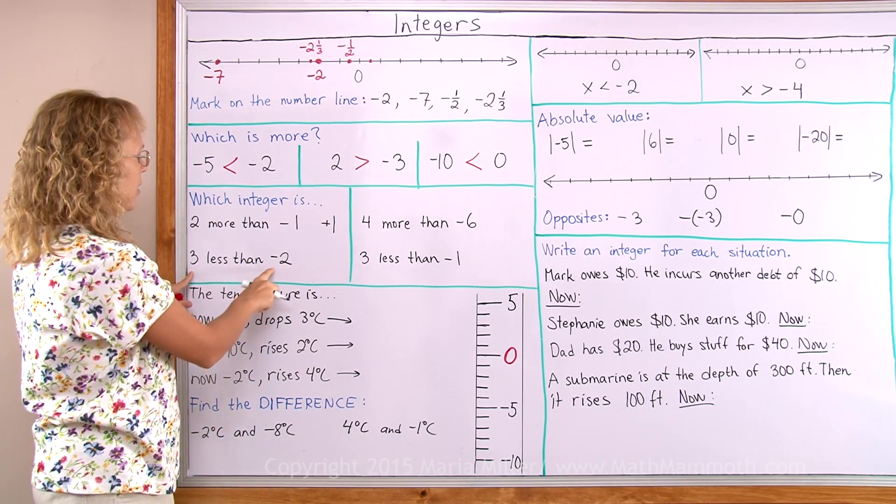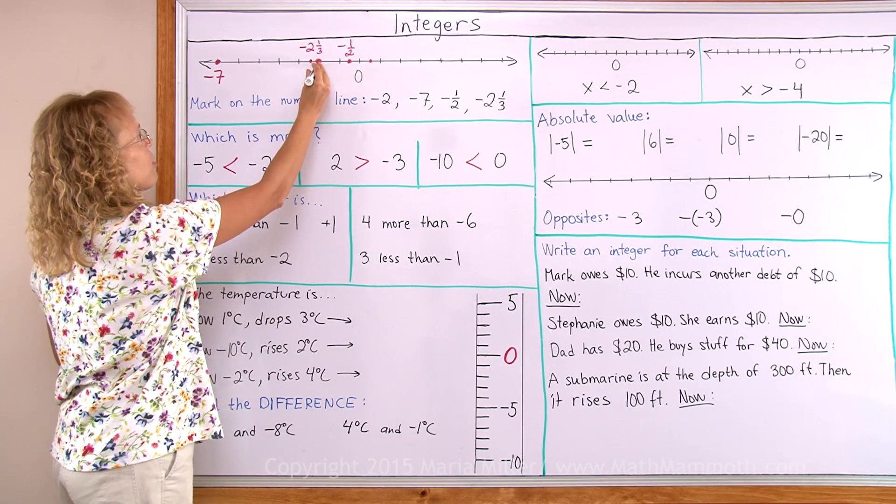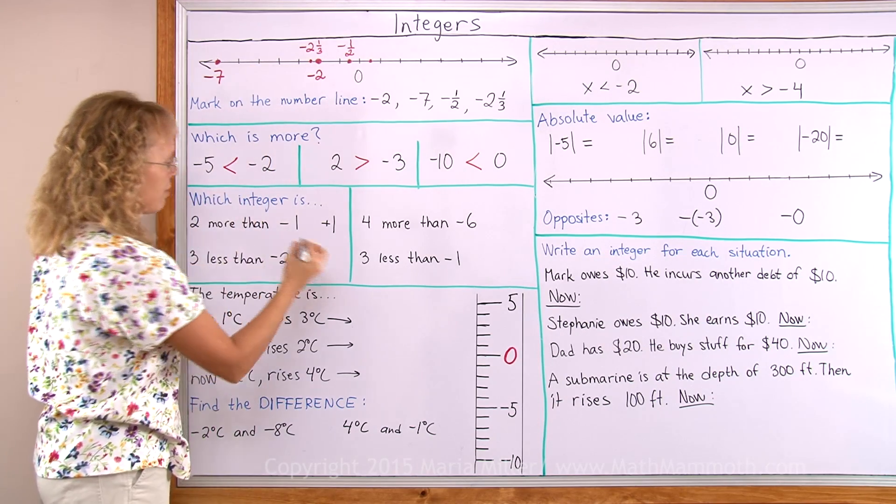3 less than negative 2. I find my negative 2 and go 3 less. 3 more towards the debt, so to speak. And that is negative 5.